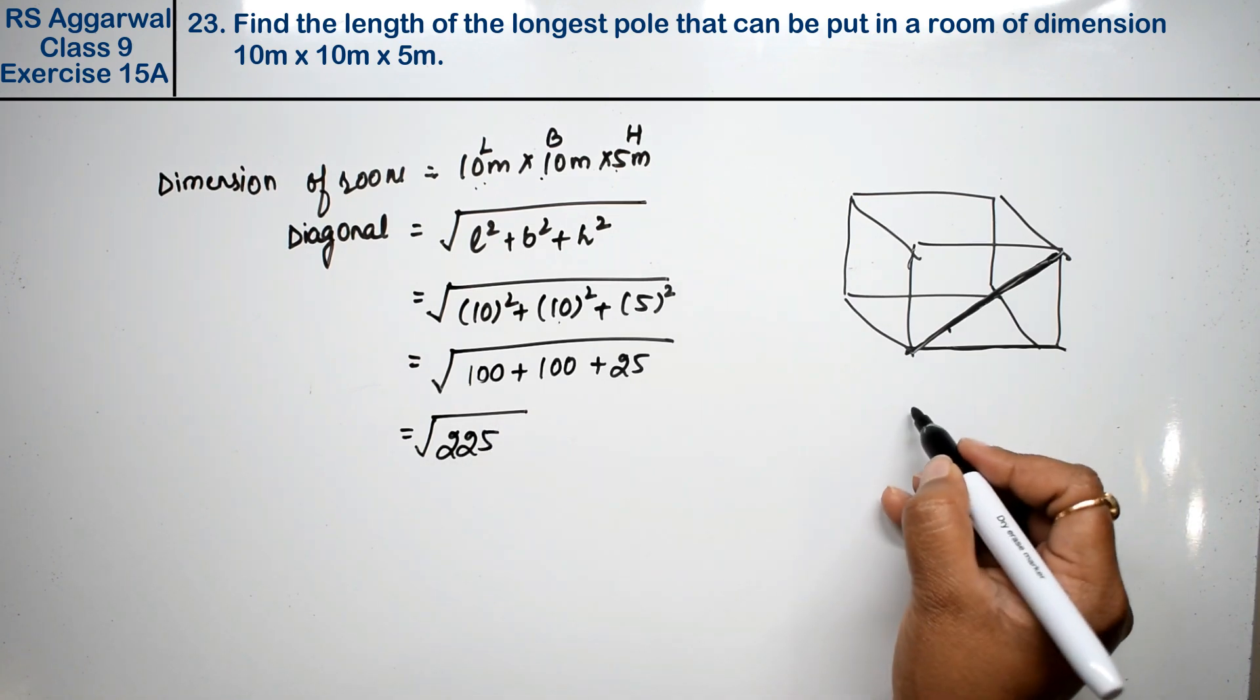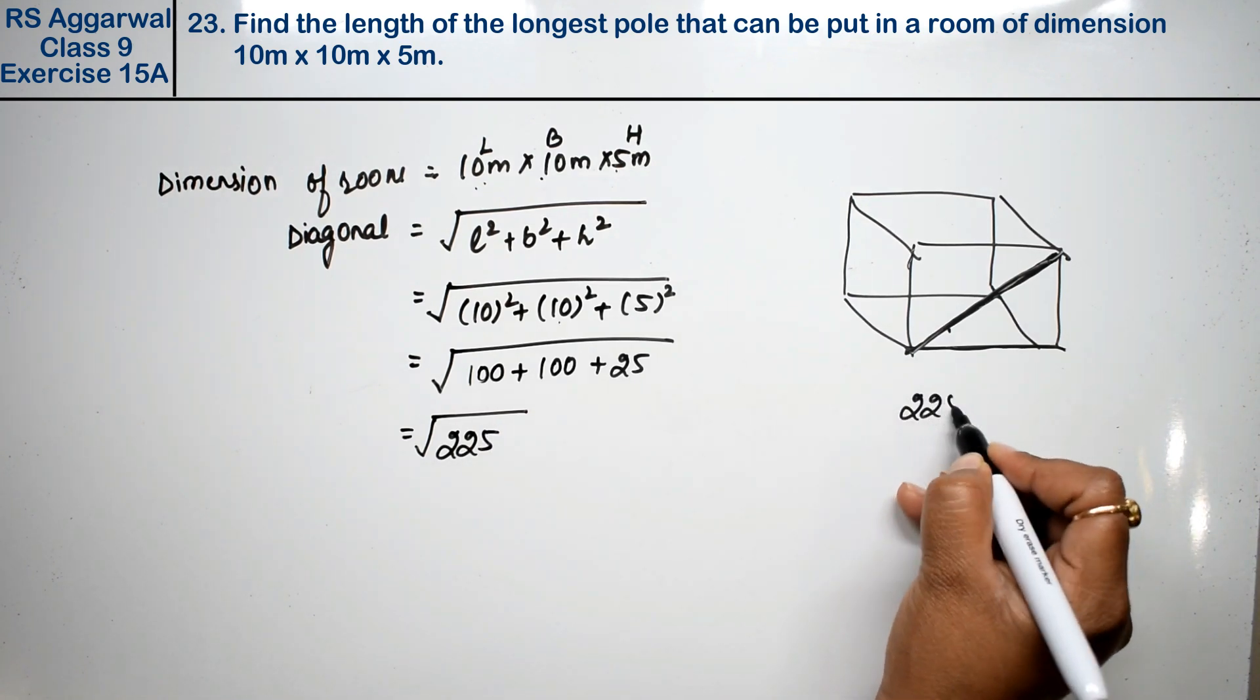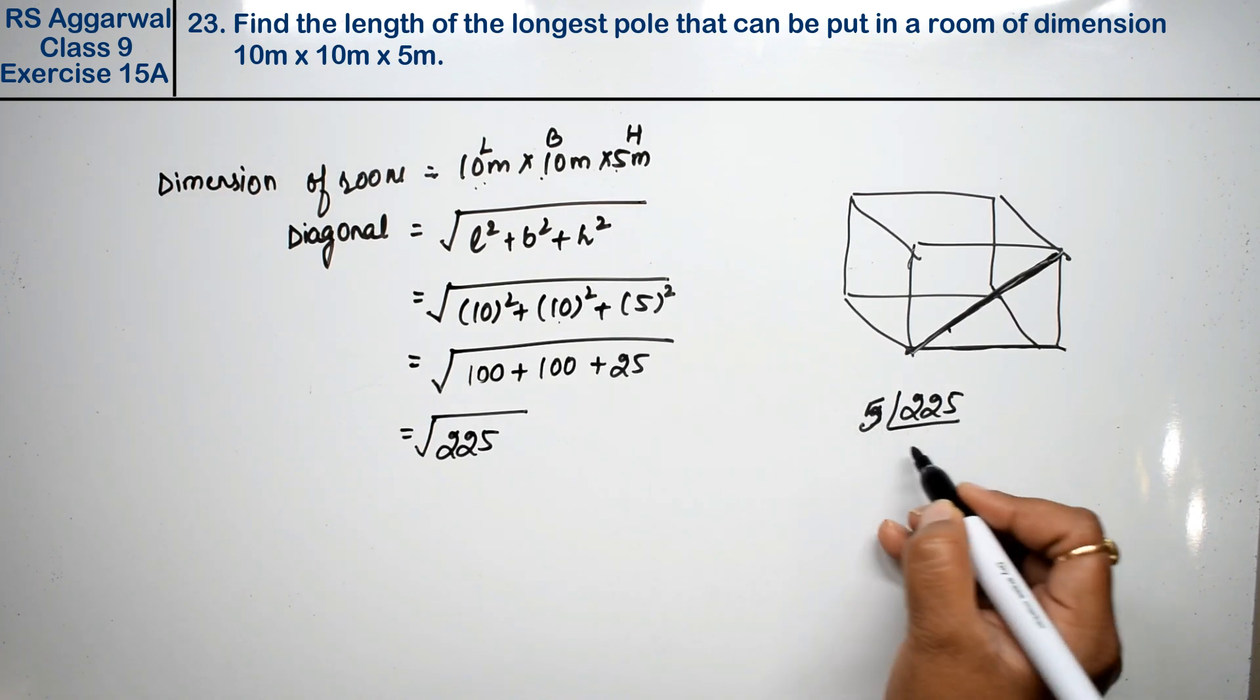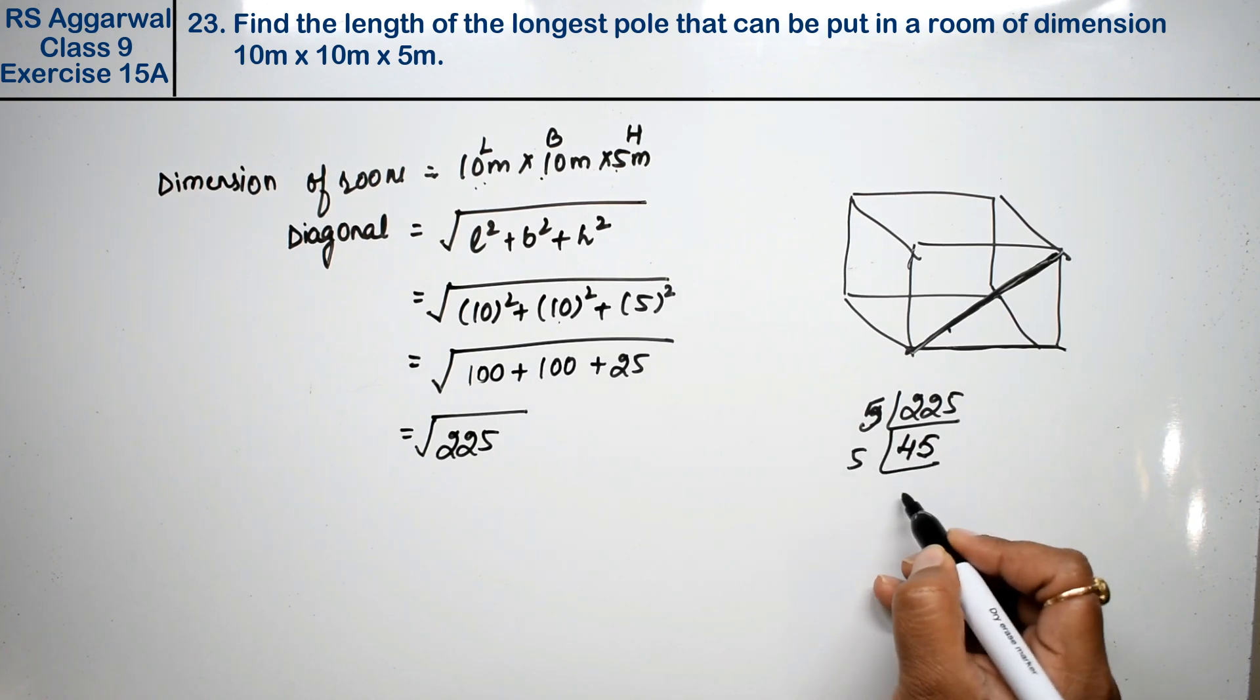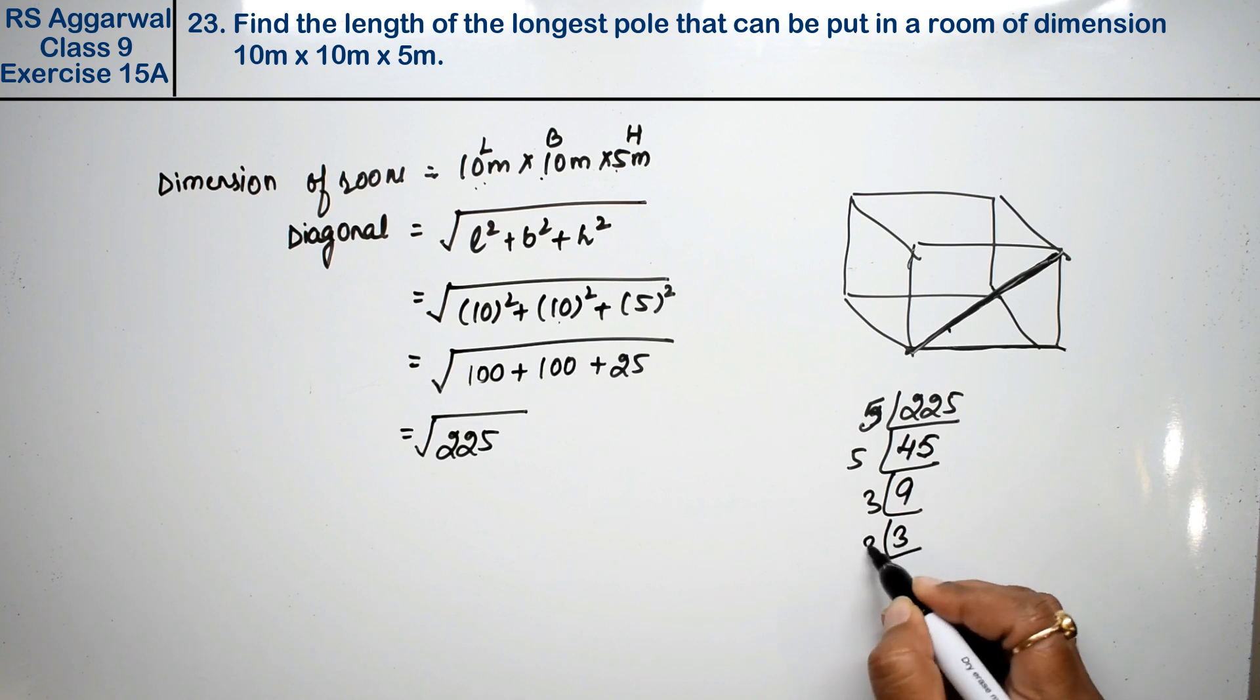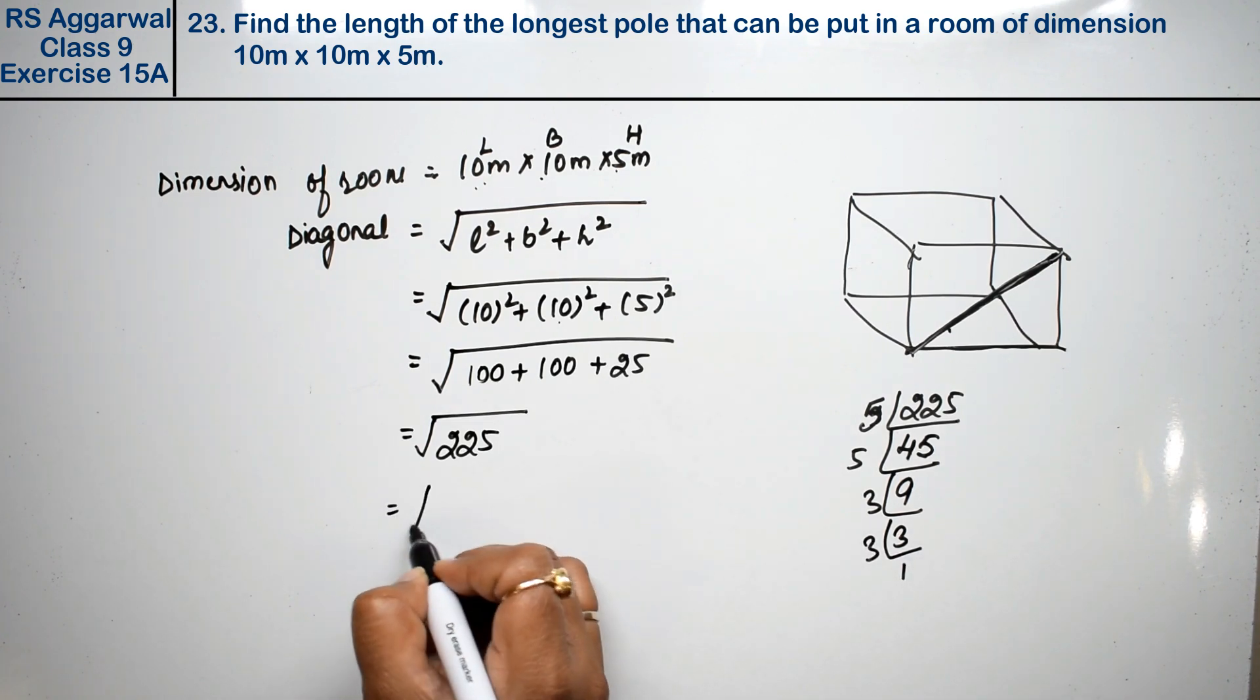So make two pairs. LCM took 5 from 5. 5 times 5 is 25. Again 5. 5 times 9 is 45. 3 times 3 is 9. How much is the square root?